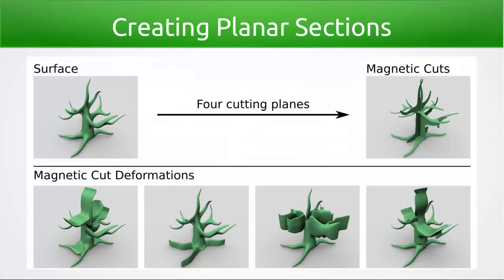Instead of using a non-planar contour, however, we locally deform the input surface and then take a planar contour with the deformed surface. This planar contour more effectively captures the shape's silhouette viewed along the plane's normal direction. We call such deformations magnetic cuts. Details of the deformation are included in the paper.